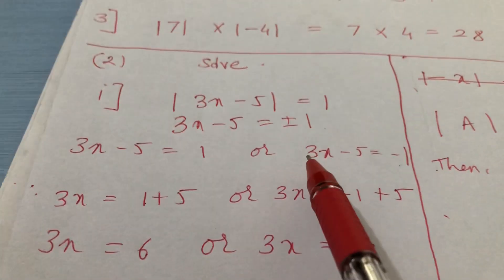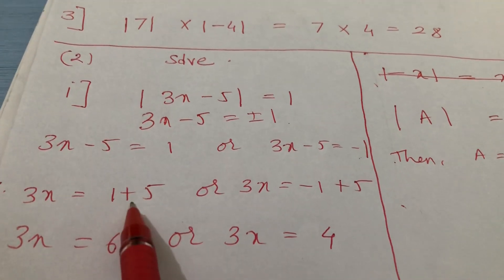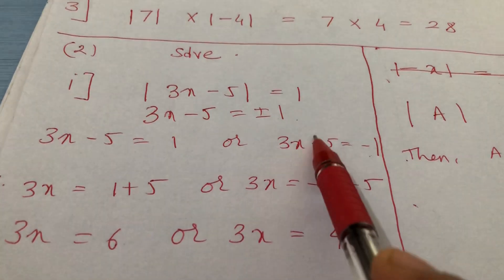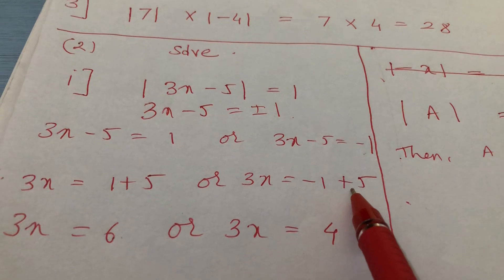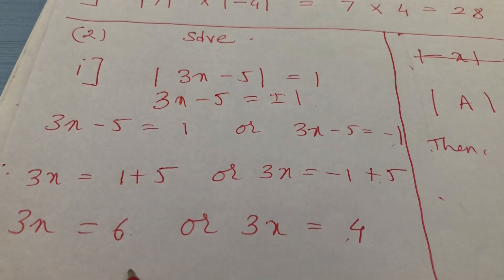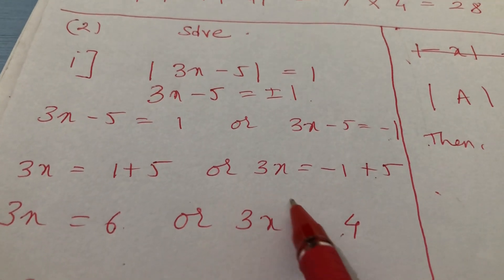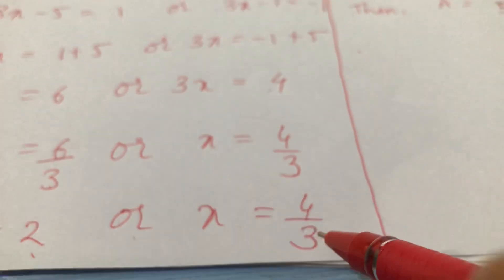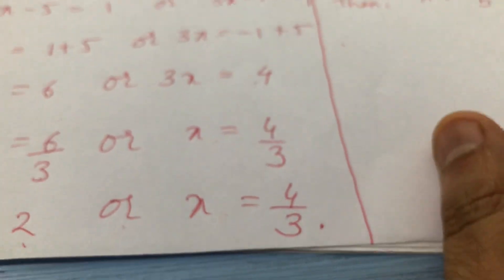Now just solve each case. For 3x minus 5 equals 1: bring minus 5 to the other side as plus 5, giving 3x equals 6. For 3x minus 5 equals minus 1: bring minus 5 over as plus 5, giving 3x equals 4. Divide both by 3: x equals 6 over 3, which is 2, or x equals 4 over 3.